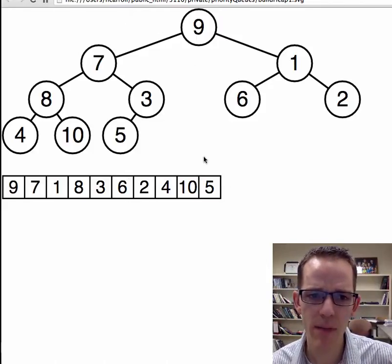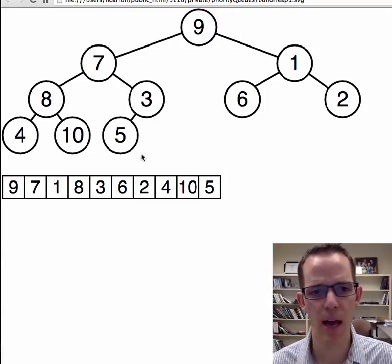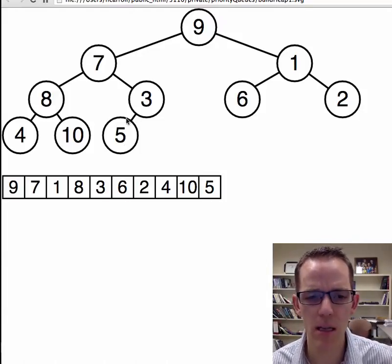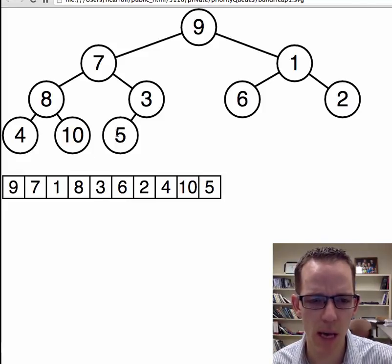So now we have this, we've already done step one, we've said you are a complete binary tree. Here we go, we can see that. Now, the second step is to heapify every node, starting at the lowest level. Let's start from the back of the array forward. Okay, heapify on five, okay, done.